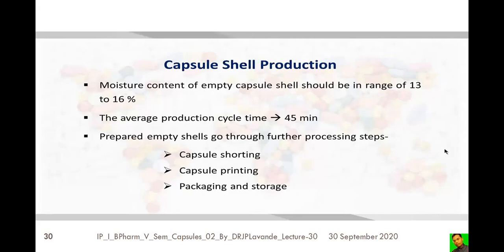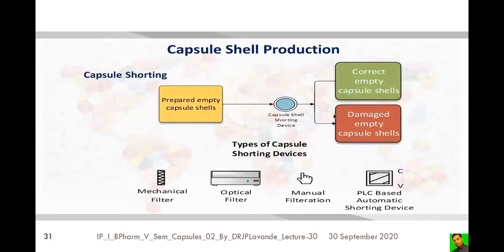Once capsule shells are produced, they undergo processing which consists of sorting — selecting good capsules and discarding defective ones — followed by printing the brand name, content name, dosage strength, or logos, then packaging, and finally storage, from where they are released for the filling process.